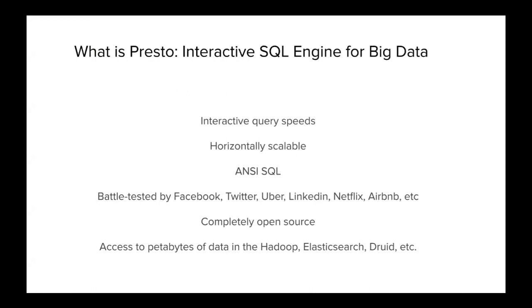Presto is originally created by Facebook engineers, and now a large number of companies are using Presto at very large scale. For example, Facebook, Twitter, Uber, LinkedIn, Netflix, Airbnb, and so many others. As far as I know, all these companies either have several hundreds nodes clusters, or thousands of nodes clusters. On Facebook, they have hundreds of thousands of machines running production jobs. Also Presto is completely open source.